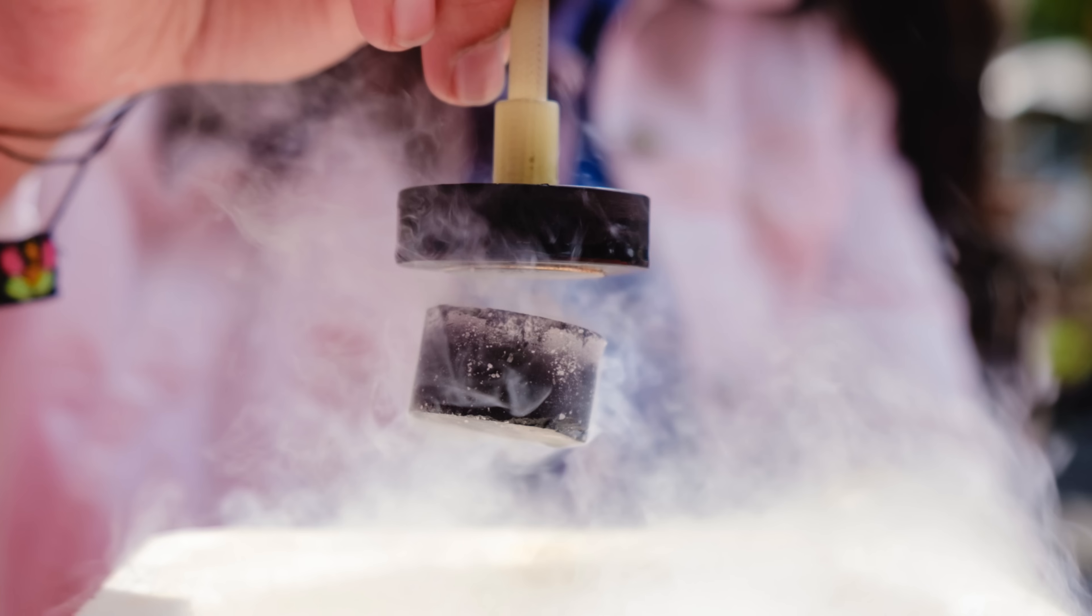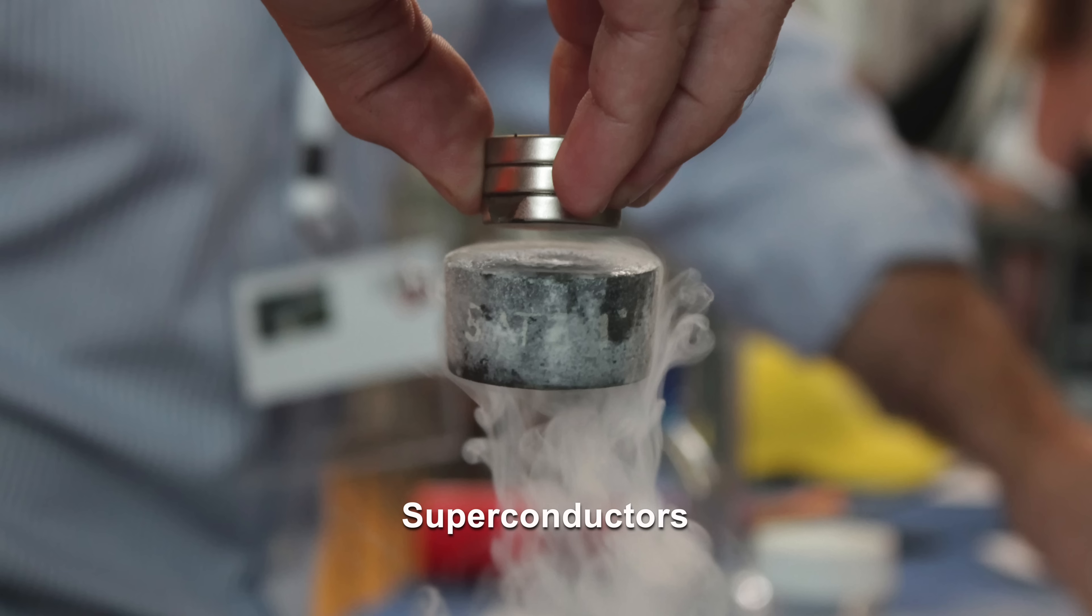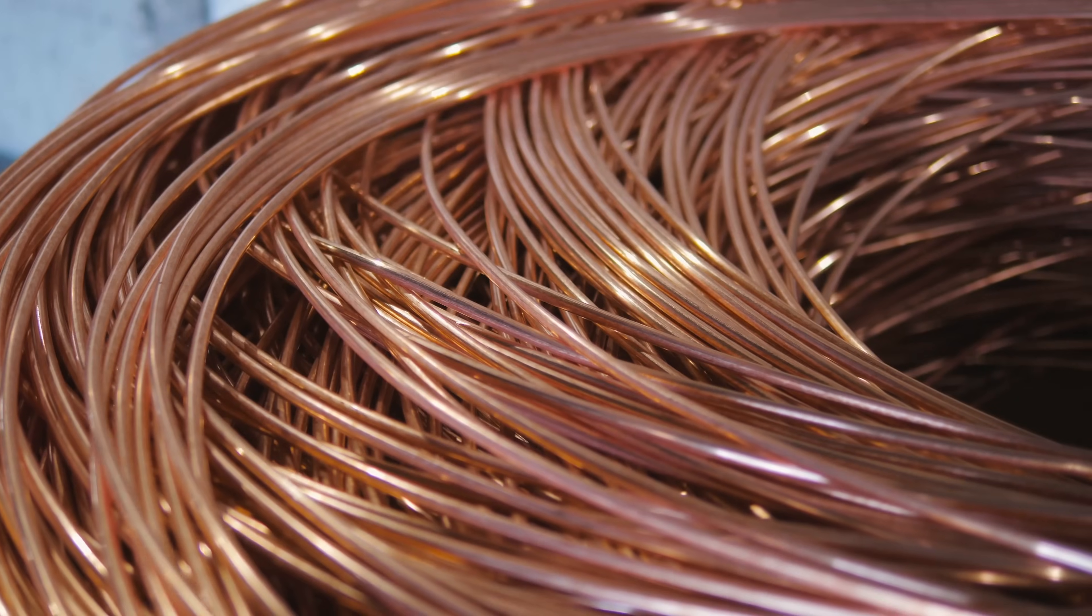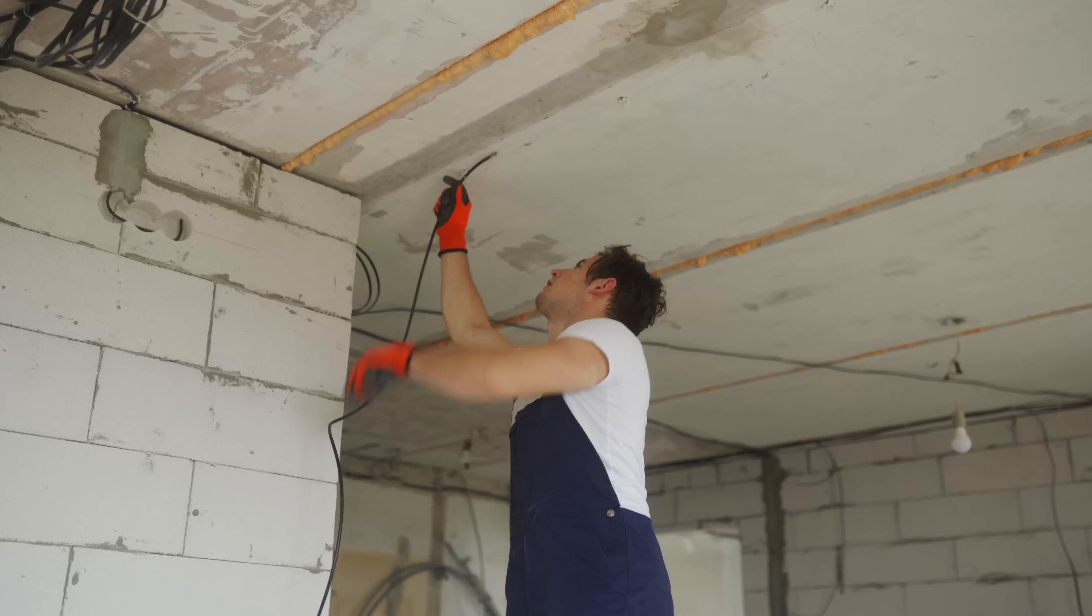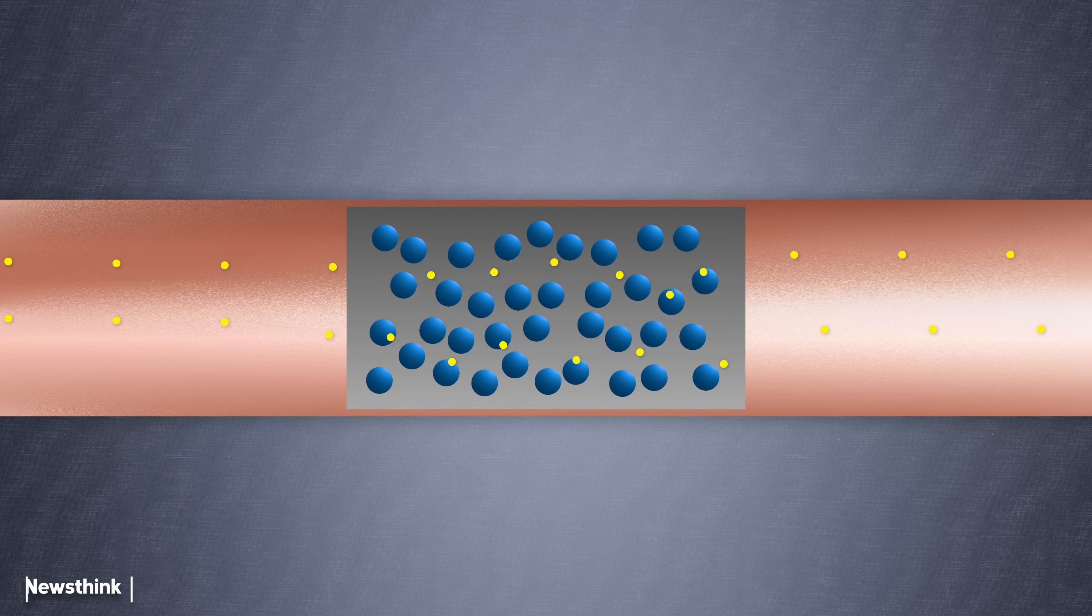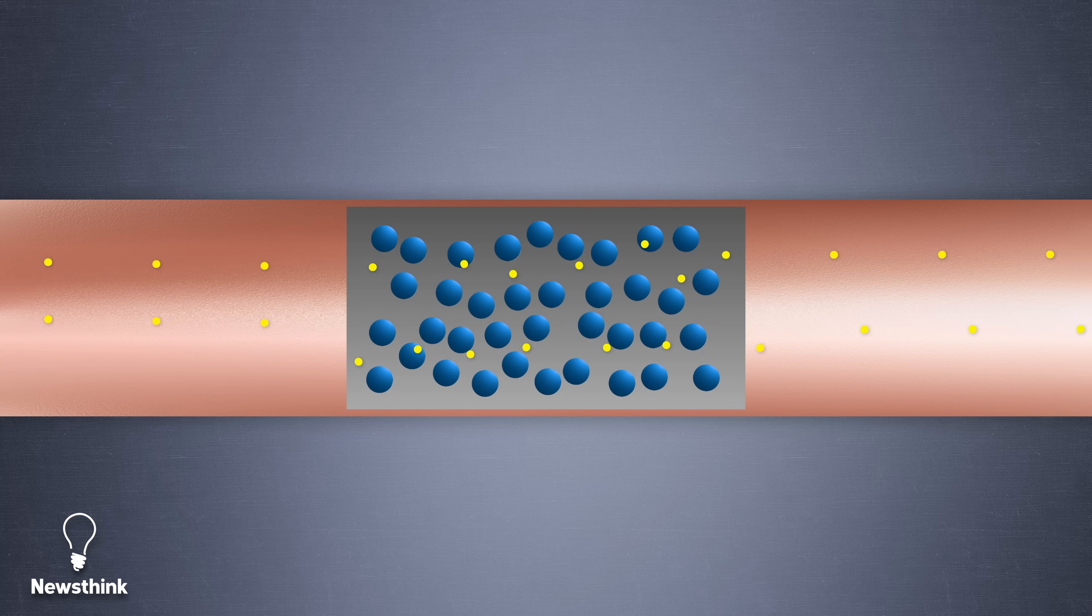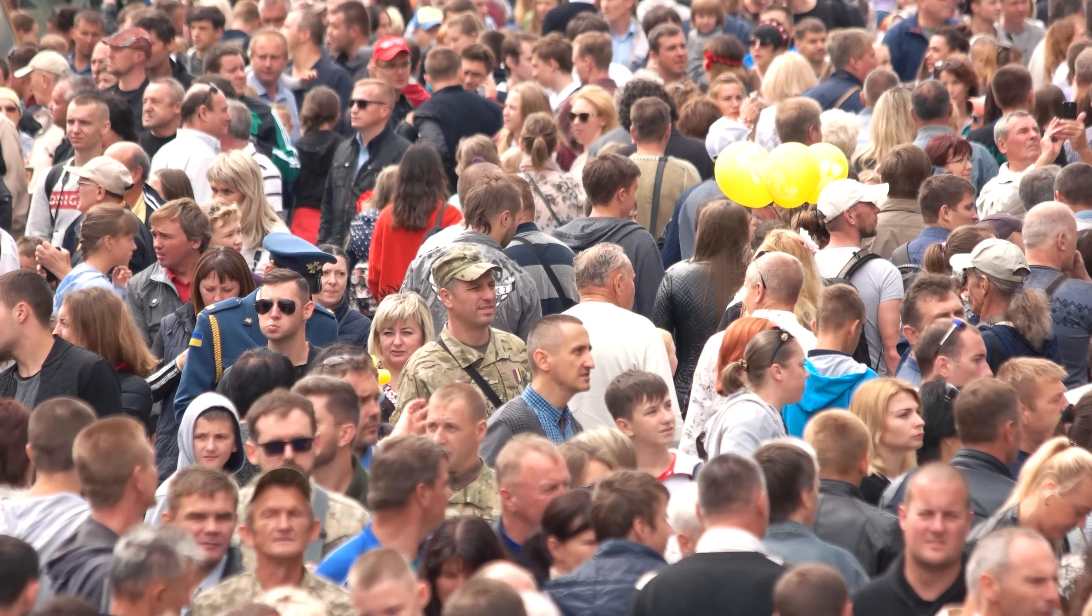Quantum entanglement also helps explain the extraordinary properties of superconductors, materials that exhibit no electrical resistance. In conventional conductors like copper, the standard wiring found in homes, electrons encounter resistance as they collide with atoms and other electrons, leading to energy loss. It's like walking through a crowded room and bumping into other people.